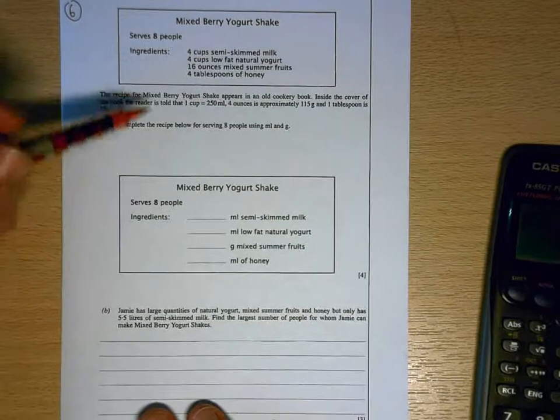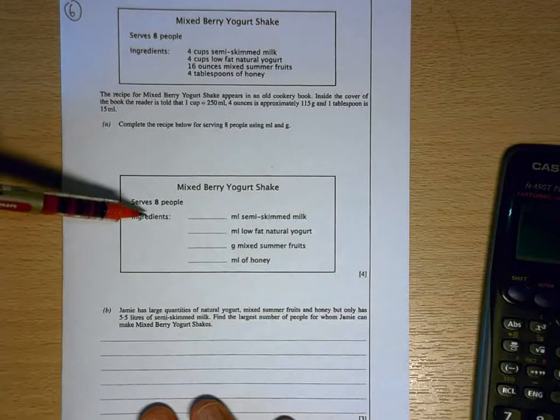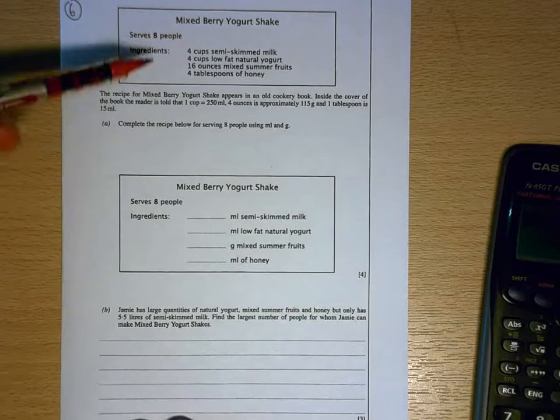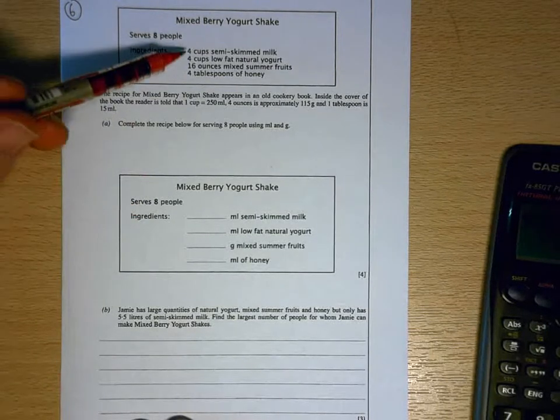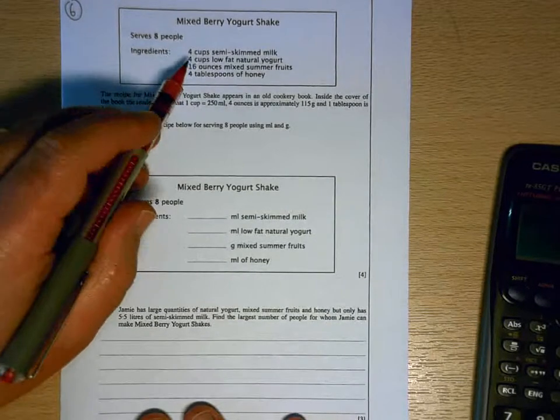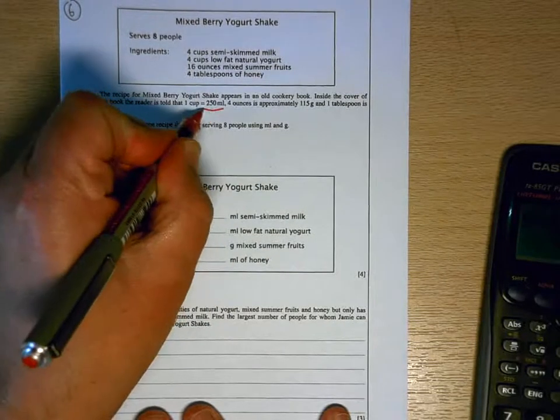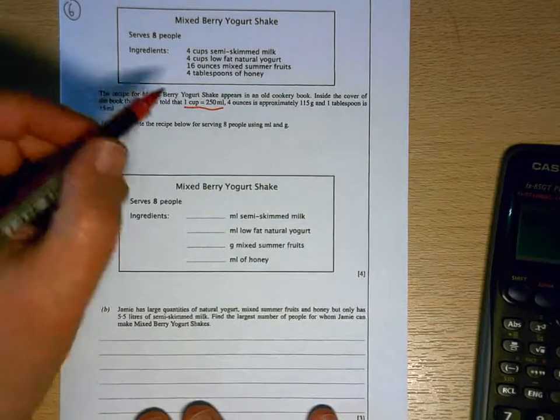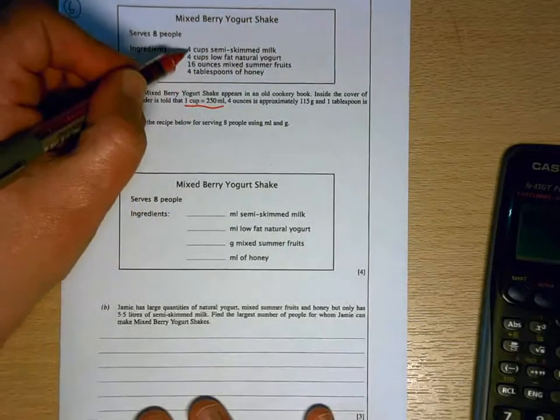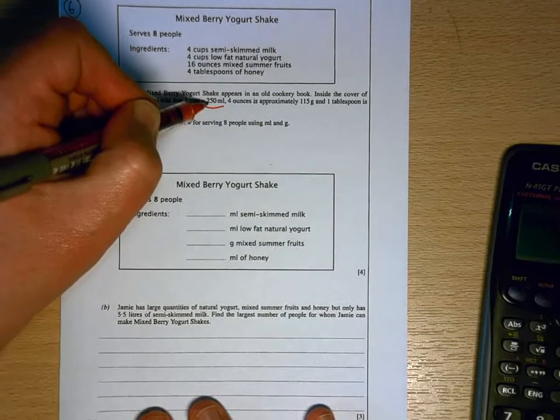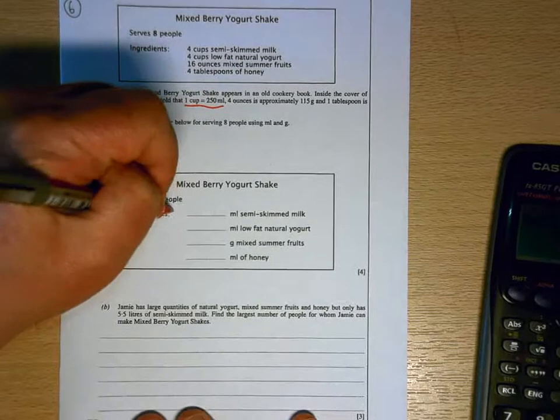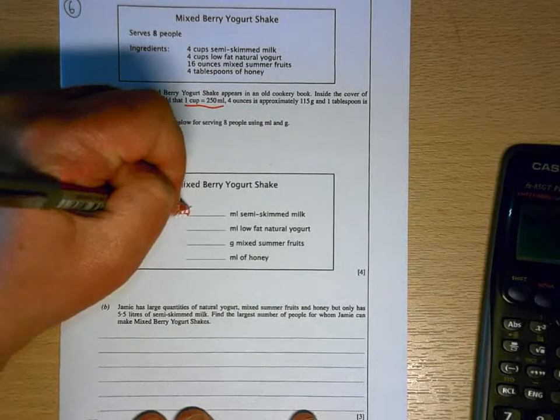So the recipe is exactly the same. We're still doing it for eight people, so we don't have to scale the recipe up, just change the units. So working with the cups first of all, we got here that one cup is 250 mil, so four cups would be four lots of 250 mil. So if we do four times 250 there, we've got a thousand milliliters of semi-skimmed milk.